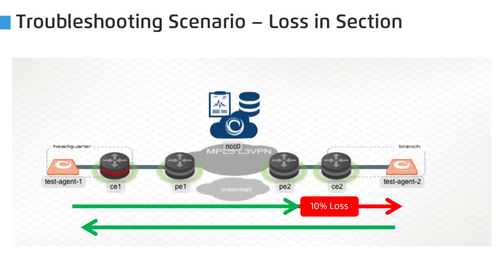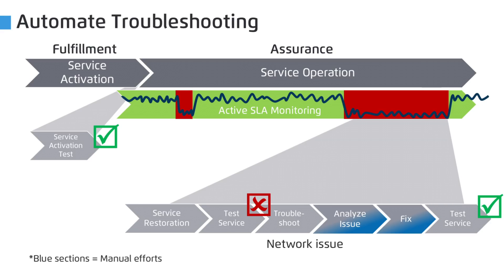Now over to an automated troubleshooting scenario. NetRounds detects an SLA violation. In this case, the problem is an underlying network issue — it could be due to an off-net connection or a utilization problem. First, an automated healing attempt is made in case it's a configuration issue. That is not the problem, so the automation loop moves over to a troubleshooting phase.